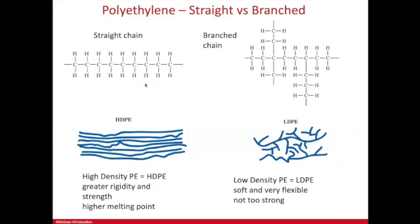Or, depending on the catalyst, you can allow for branching. This is the same polyethylene monomer, but instead of being just a straight chain, you can have branches off the main chain, which are still going to be monomers, but just not one long straight chain. So the end result is the big difference leading to HDPE, high-density polyethylene.